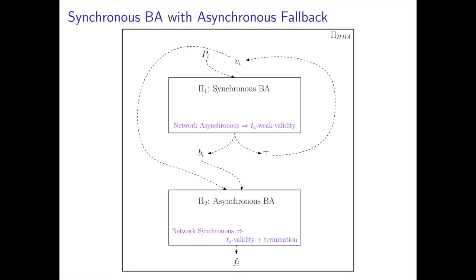If the network is synchronous and parties do not have agreement on a bit, they will have agreement by the end of the synchronous protocol, and this agreement is then preserved by the asynchronous protocol via its validity property. On the other hand, if the network is asynchronous, all security guarantees fall on the asynchronous protocol. The synchronous protocol guarantees that pre-agreement is not broken — because it achieves weak validity in an asynchronous network — so if parties output ⊤ from the synchronous protocol, they fall back to their original input vi as input to the asynchronous protocol, preserving pre-agreement and ensuring security of the whole construction.